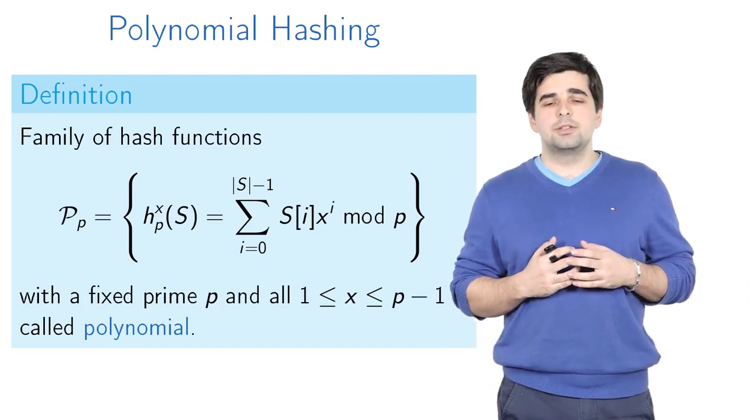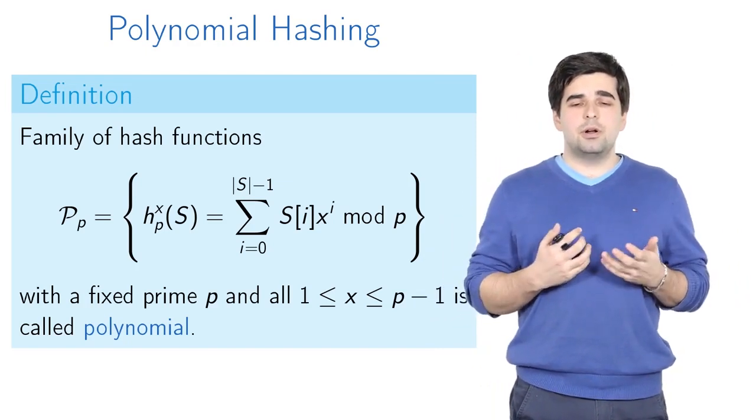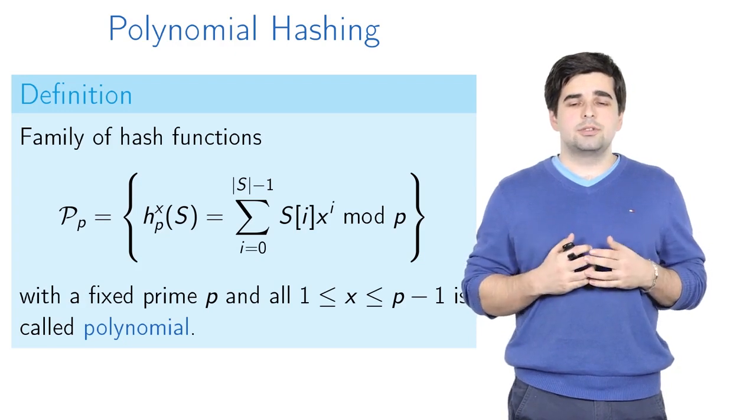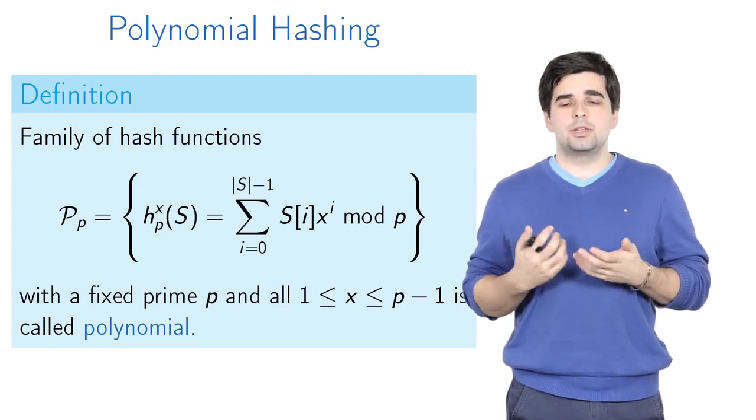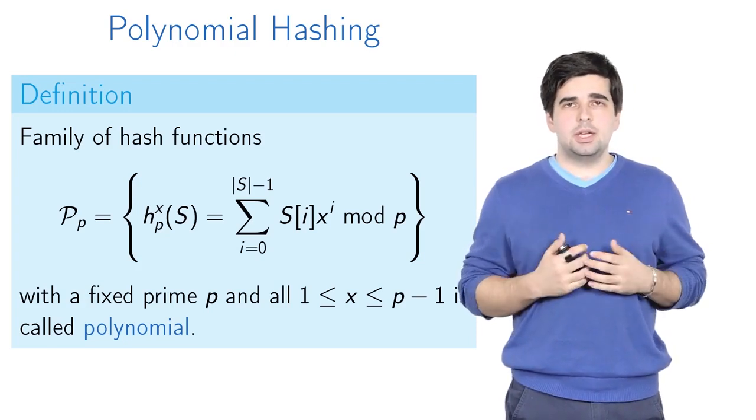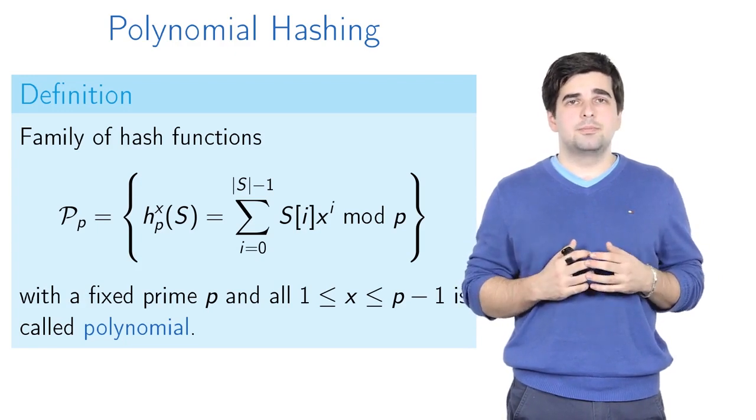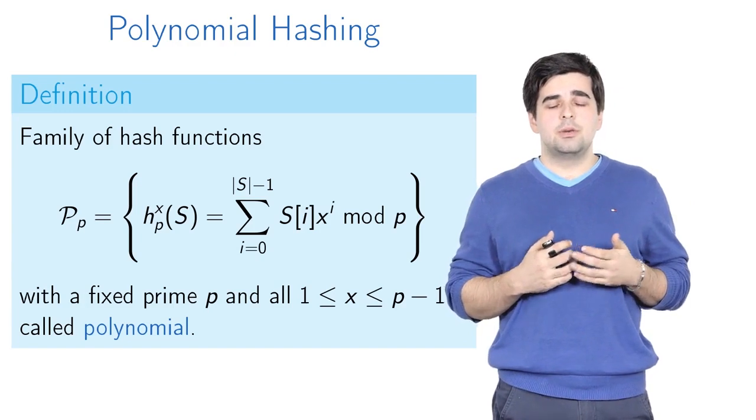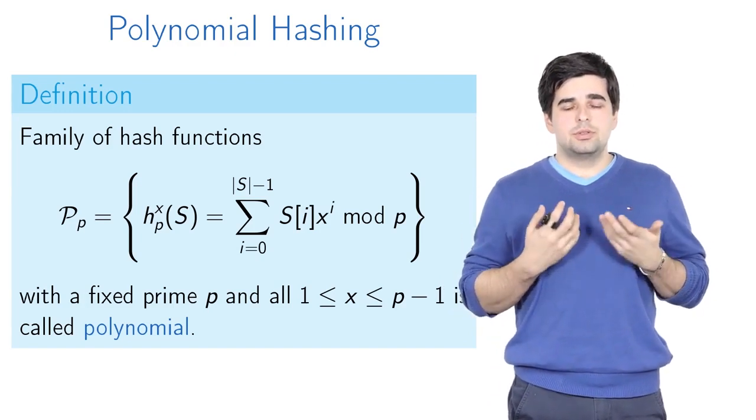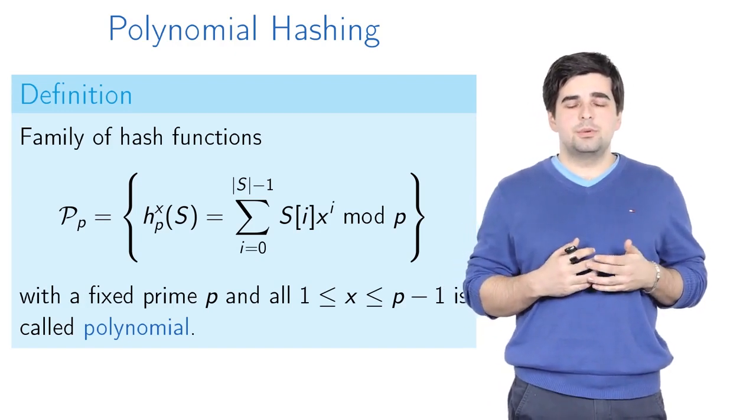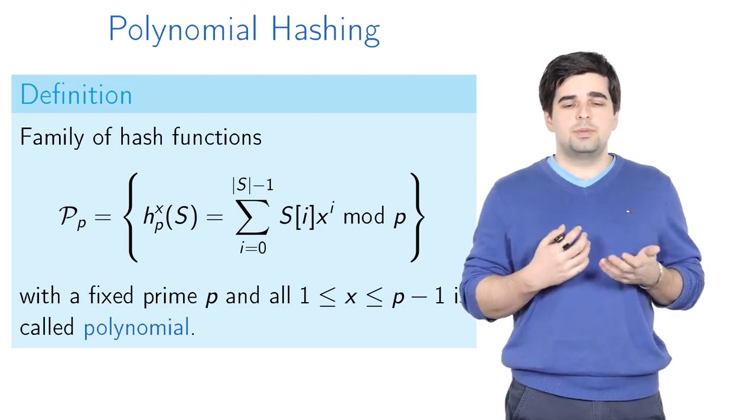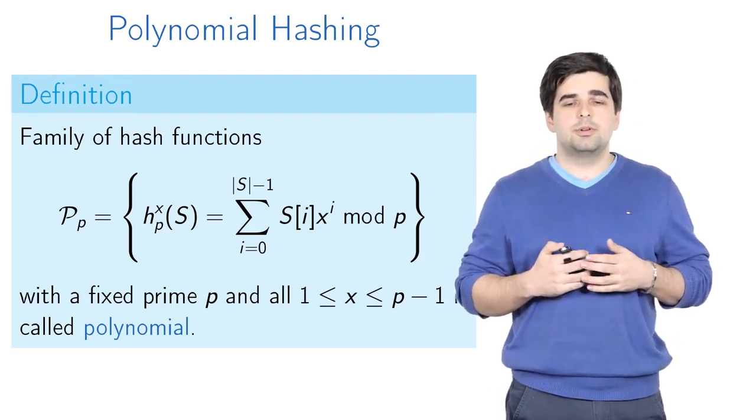This is a family of hash functions and the cardinality of all those hash functions is p. Any such hash function returns a value from 0 to p-1. How many hash functions are there in this family? There are exactly p-1 different hash functions because to define a hash function from this family, we just need to choose the value of x. x changes from 1 to p-1 and it's an integer number.